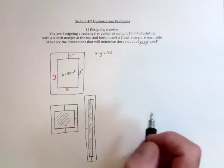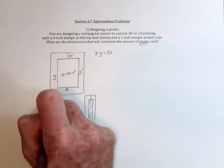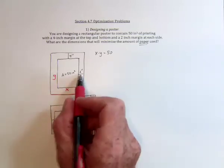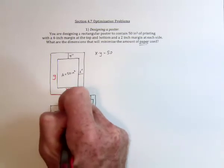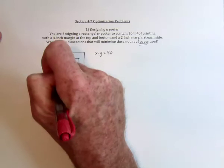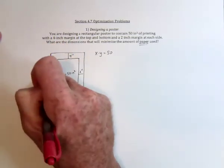But then the problem is asking about the amount of paper used. So the amount of paper used is going to be the whole poster. So you need this whole side, which is x, plus 2 inches on that side, and 2 inches on that side, so it's x plus 4. Likewise this is going to be y, with 4 at the top and 4 at the bottom, so that's going to be y plus 8.